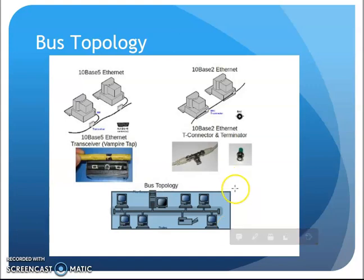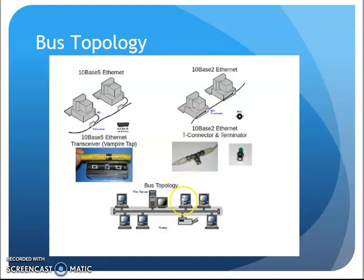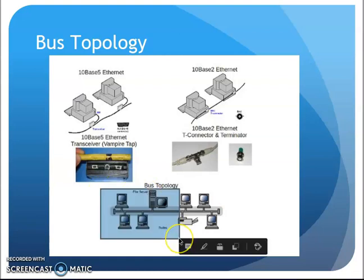In those days, when a computer wanted to send data from A to B, it would send a signal out onto the wire and it would literally go to everybody, because there was no traffic control device — no switch or router. As that signal left the computer it went to everybody in the network. The correct recipient would pick it up, and all the other devices would discard it as junk.